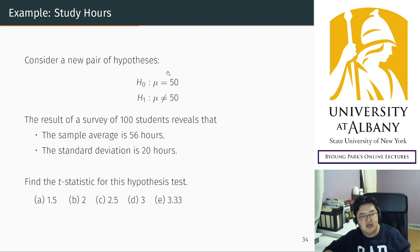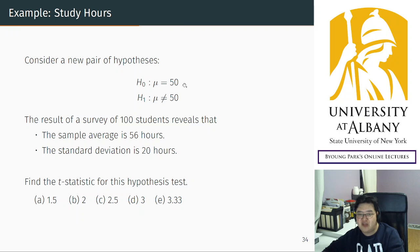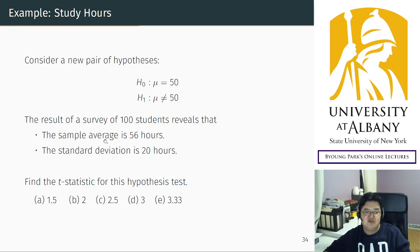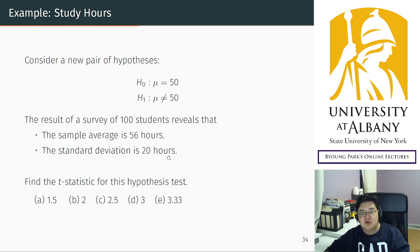I will give you the same context. Suppose that for the final exam, I believe that students study 50 hours, and I surveyed 100 students again. I obtained a sample average of 56 hours, and the standard deviation was 20 hours. We will do the algebra step by step, which is pretty simple. First, calculate the t-statistic using those numbers. The t-statistic is the difference between your belief and the data, standardized. Try to calculate this by yourself after pausing the video.